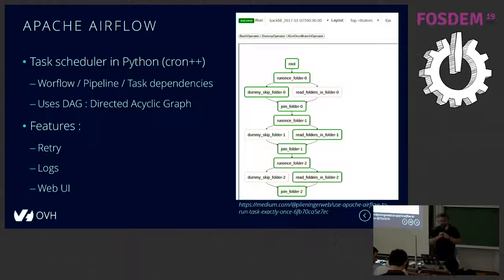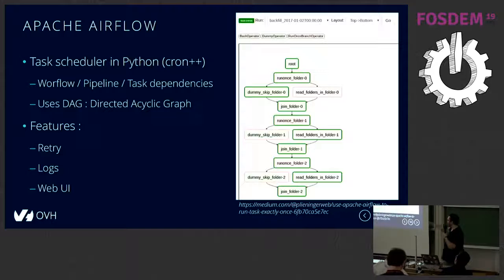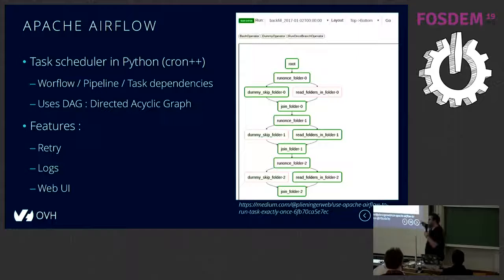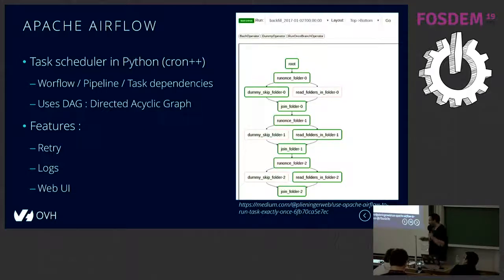Airflow is a workflow or pipeline manager. It manages task dependencies — some tasks must be done before others, and some can run in parallel. The best practice is to have idempotent tasks. We decided to use Airflow for many reasons: if any task fails, we can fix the problem and retry it using a CLI or the web server. We also have access to a great web UI with logs of everything.